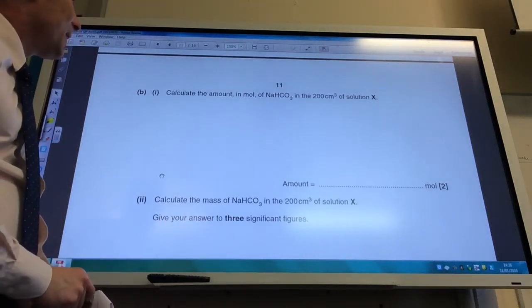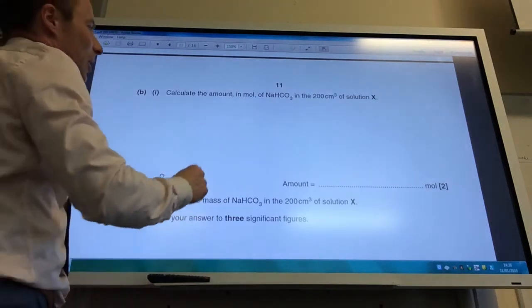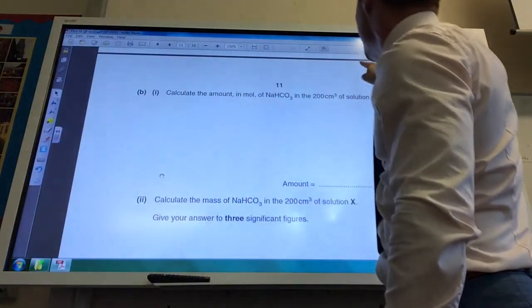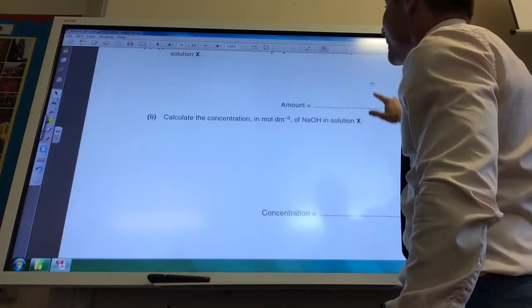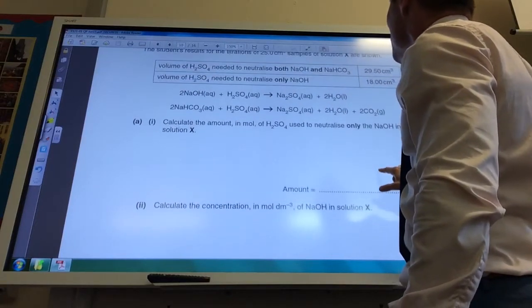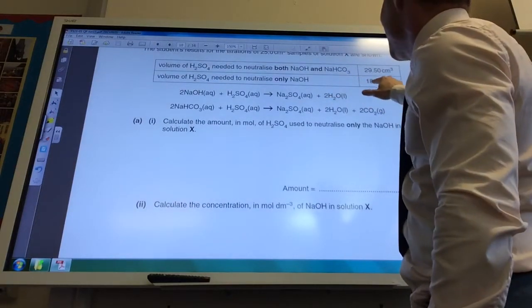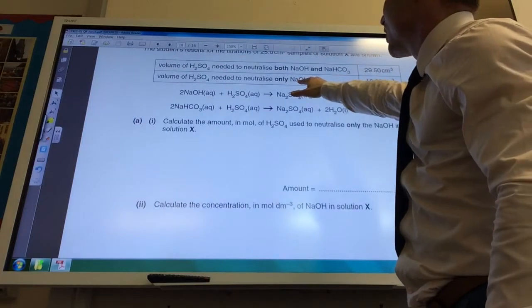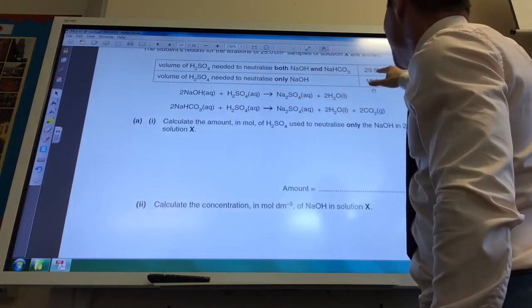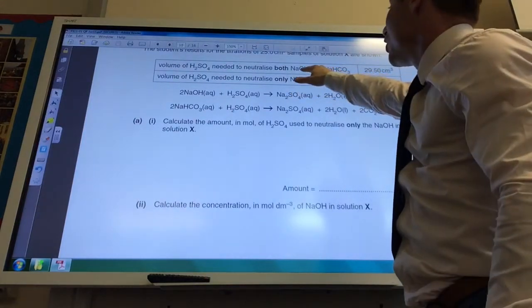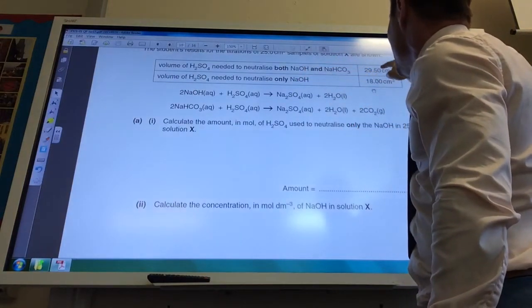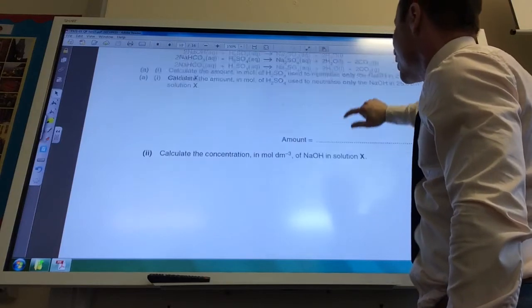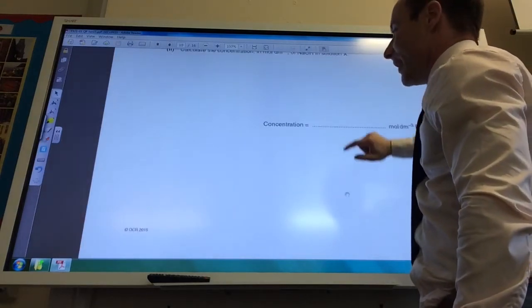Right, it now wants me to calculate the amount of moles of sodium hydrogen carbonate in 200 centimeters cubed of solution X. If we go back to the beginning of the question, you'll notice that I needed 18 centimeters cubed to neutralize the sodium hydroxide and 29.5 to neutralize both the sodium hydroxide and sodium hydrogen carbonate. So the difference between those two is the volume needed to neutralize the sodium hydrogen carbonate.